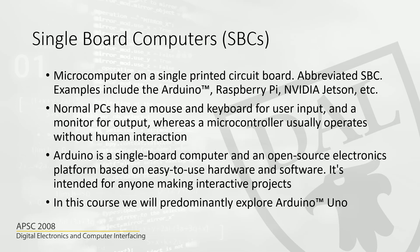If you're comfortable with Arduino, you can move on to Raspberry Pi. Raspberry Pi can run a full-fledged operating system like Ubuntu, Linux, or Windows. Arduino, however, does not run any operating system — you program the microcontroller directly. Raspberry Pi and Jetson Nano support operating systems like Ubuntu, Linux, or Raspberry Pi OS.